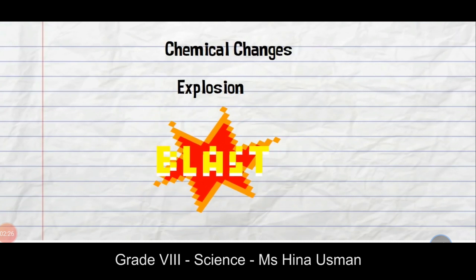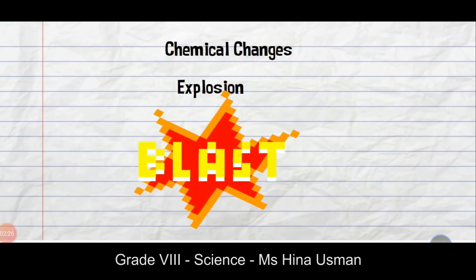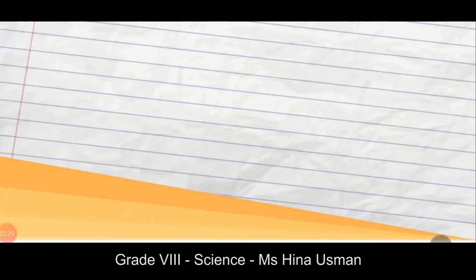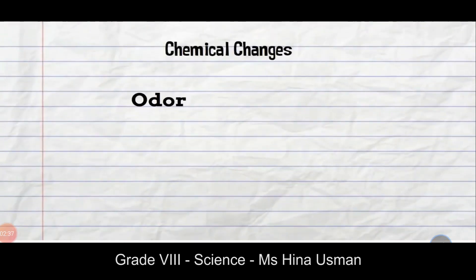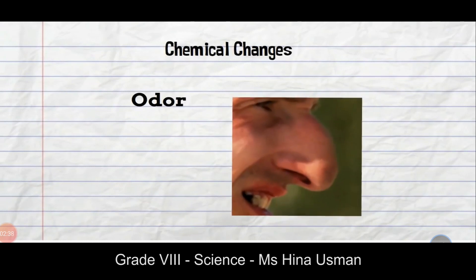The first type is synthesis or combination reaction. It is a reaction where two or more elements or compounds combine together to form a single compound. These are mostly exothermic reactions. Examples include the formation of water from hydrogen and oxygen, and the reaction of iron and sulfur.